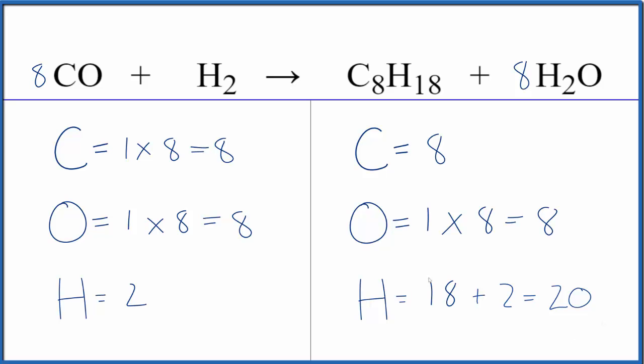Now let's update the hydrogens. So we have the 18 plus eight times two is 16. That gives us 34 hydrogen atoms. But again, hydrogen, it's by itself. So two times something gives me 34. Two times 17, that would give me 34. 17 is our coefficient here in front of the hydrogen.